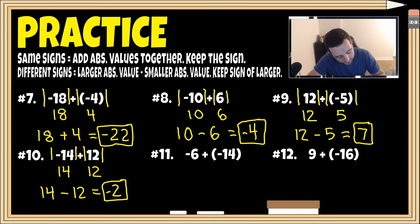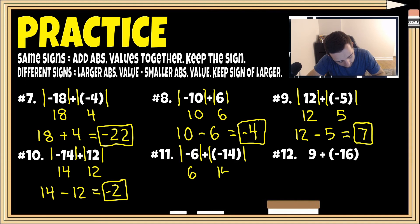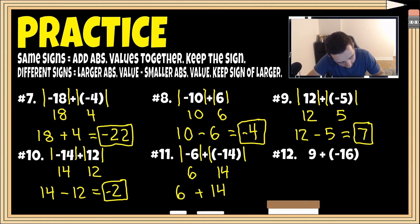For number 11, we have the same signs. The absolute value of negative six is positive six, and the absolute value of negative 14 is 14. Since we have the same signs, we add: six plus 14 is 20. Both numbers were originally negative, so our final answer is negative 20.